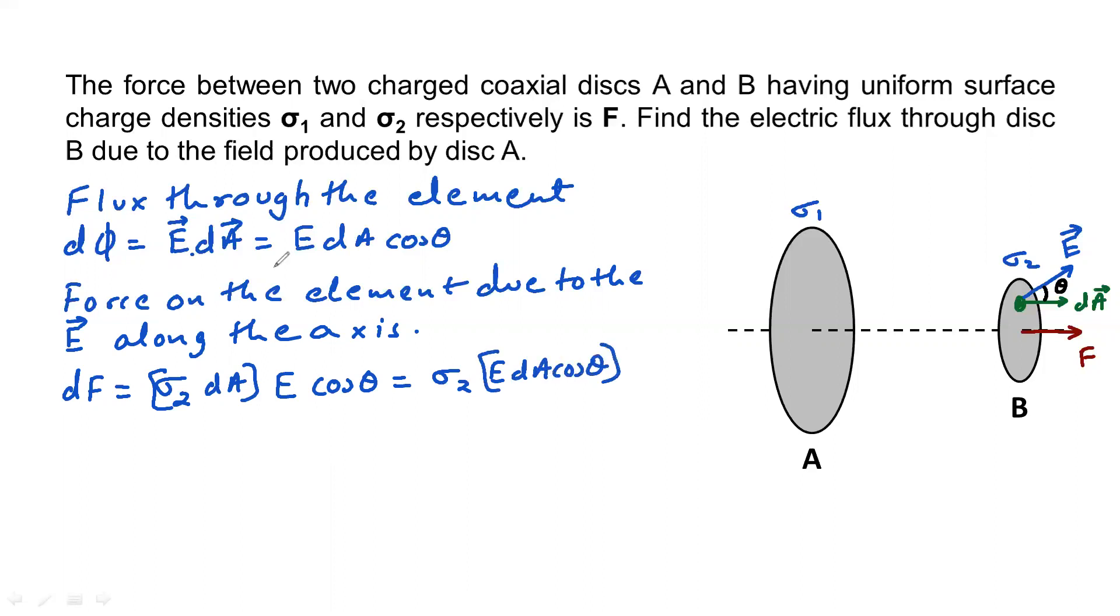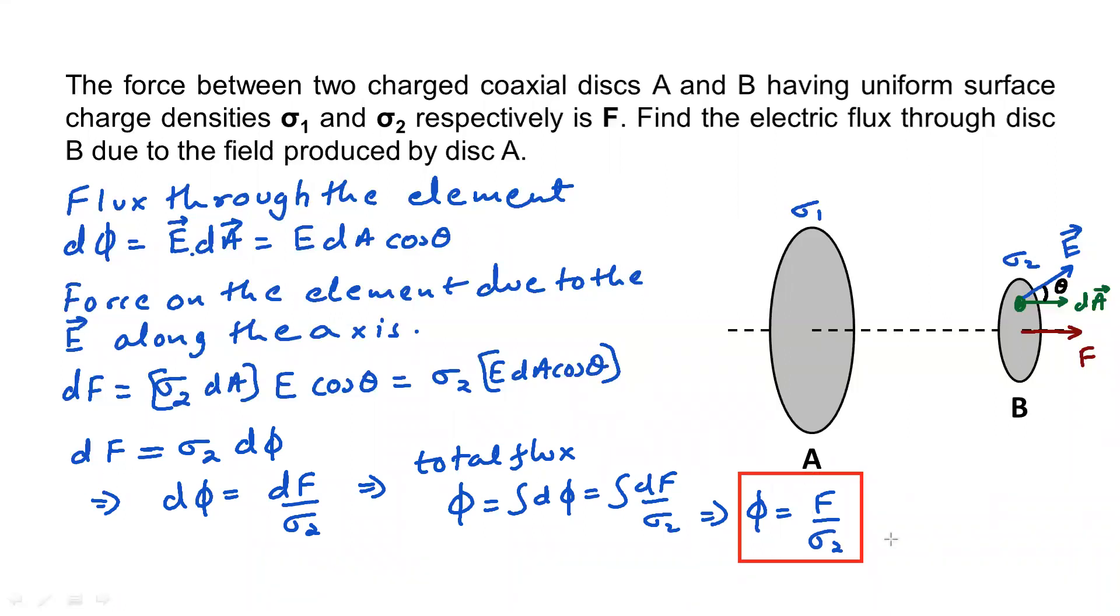E dA cos theta is dPhi, so dF equals sigma 2 times dPhi. That means dPhi equals dF by sigma 2. That implies total flux would be integral dPhi which is integral dF by sigma 2. Therefore flux is going to be F by sigma 2. This is the flux through B due to the field by A.